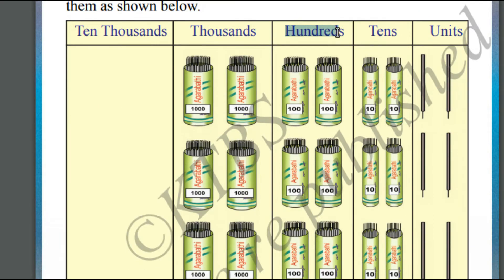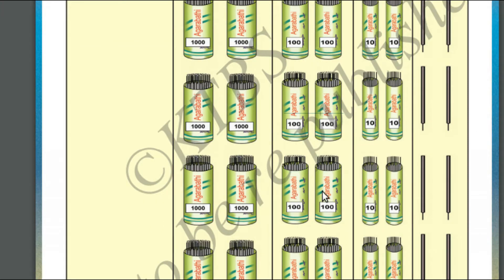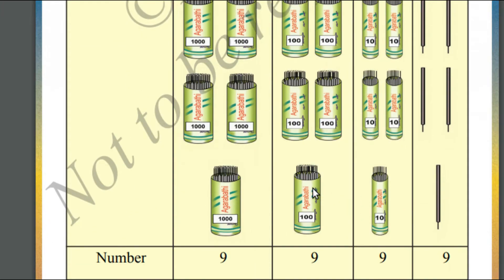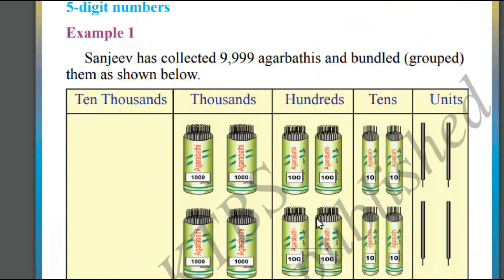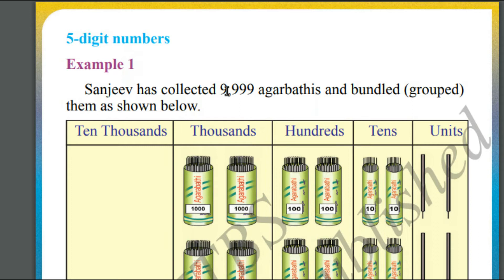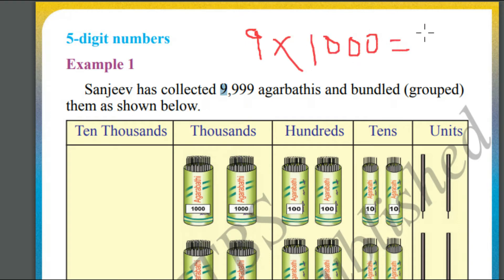In the hundreds place, we have got a group of 100 agarbathis — nine groups in total, so 9 into 100 is equal to 900. Finally, let us look at the thousands place. In the thousands place we have got 9, so 9 into 1000 is equal to 9000.